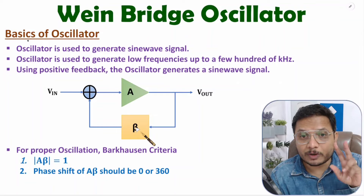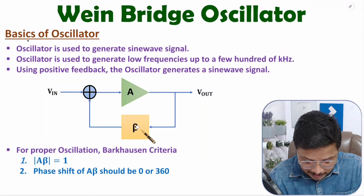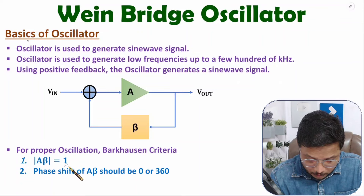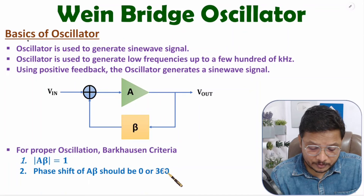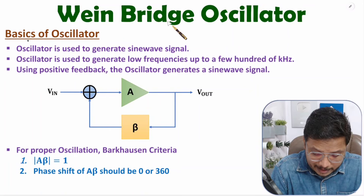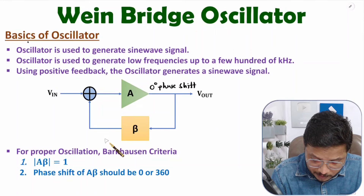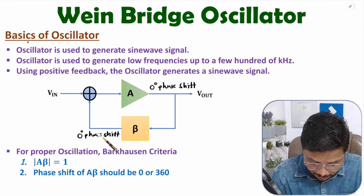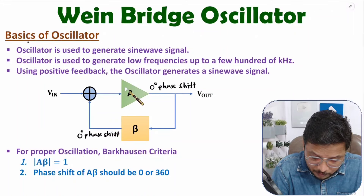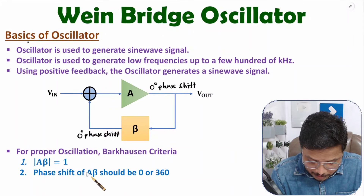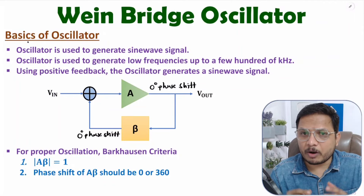For oscillation, there are two criteria. Criteria one states that gain A multiplied by beta must equal one, and the overall phase shift due to A and beta must be zero or 360 degrees. For the Wien Bridge oscillator, the amplifier provides zero degree phase shift and the feedback also provides zero degree phase shift, giving a total of zero degrees. The amplifier gain times beta must equal unity.